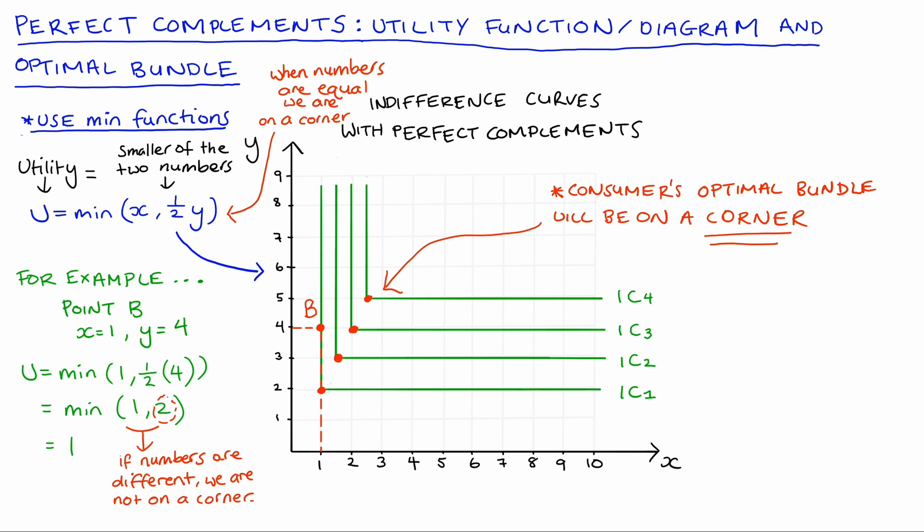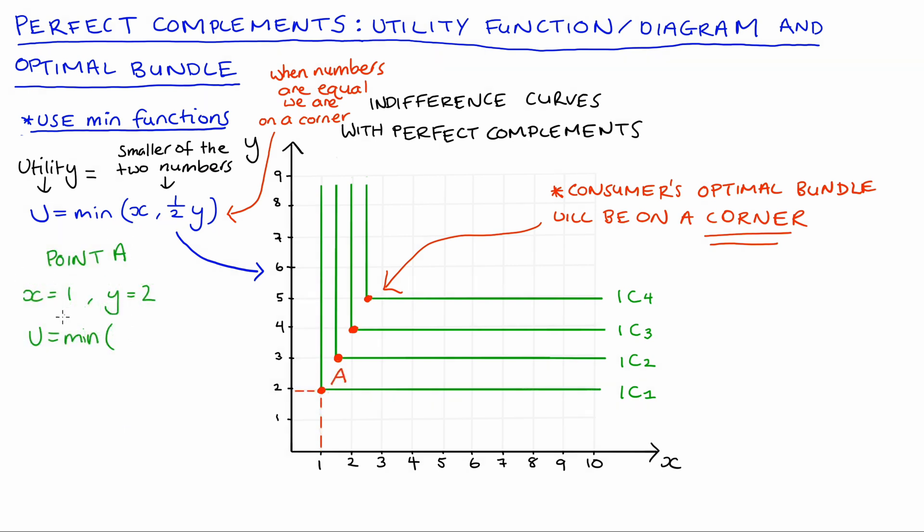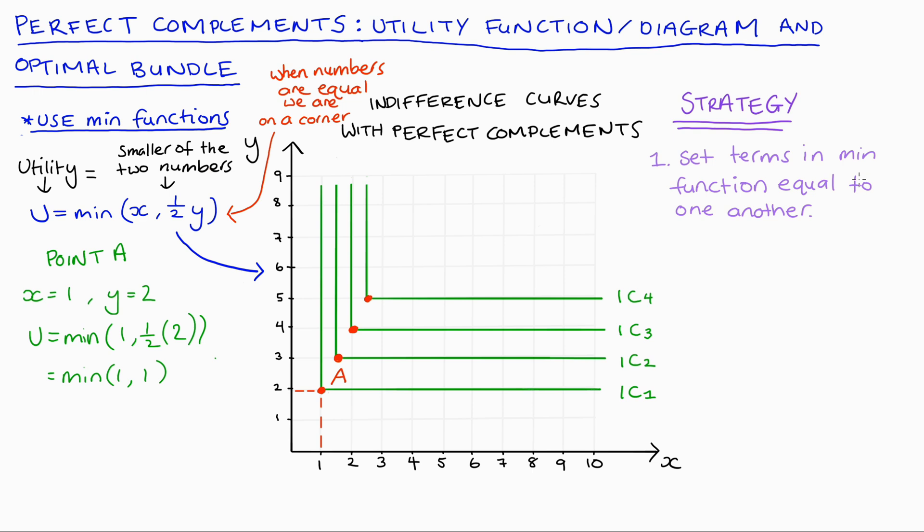So for instance let's take the corner point at point A where x is 1 and y is 2. So we'll substitute that into our function. So U equals the minimum of, well x is 1 and y is 2, so min(1, 1) and they're equal to one another. So this is telling us that we don't have any additional units of x and y that is not doing anything for our utility.